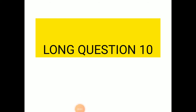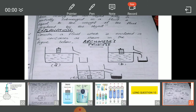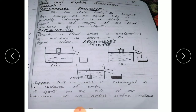Students, now we are going to revise the long question number 10, that is: state and explain Archimedes' principle. According to this principle, the buoyant force acting on an object fully or partially submerged in a fluid is equal to the weight of the fluid displaced by the object.